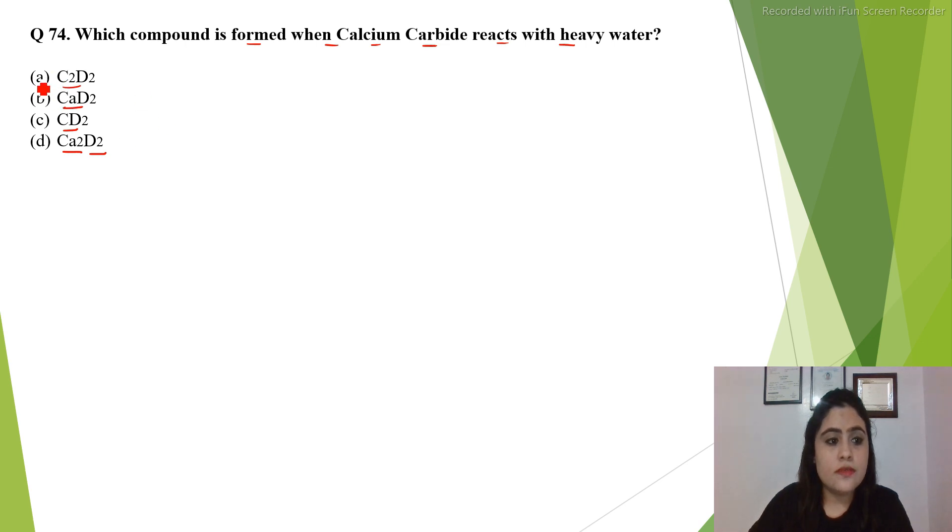The correct answer is C2D2. When calcium carbide reacts with heavy water, we get C2D2 plus Ca(OD)2. To balance this equation, we put 2 here. Now the equation is balanced.